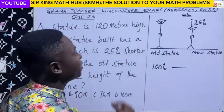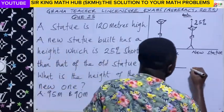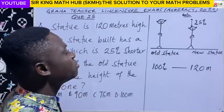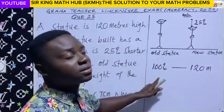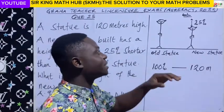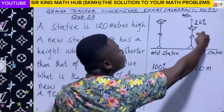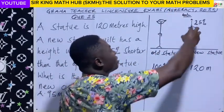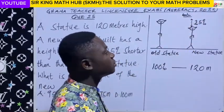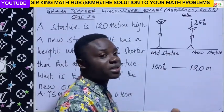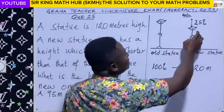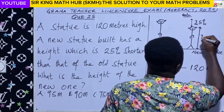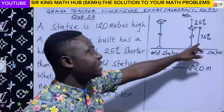The height of the original old statue is 120 meters, and that is equivalent to 100%. Now, if the original quantity is taken as 100% and the new statue is 25% shorter than the old statue, the remaining height in percentage would be 100% minus 25%, which is 75%. So the height of the new statue is 75% in terms of percentage.